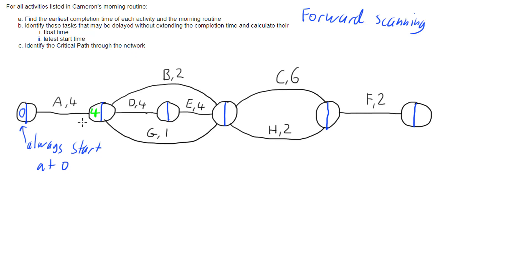Now we look through to the next node. This next node is operating off of D, which is working off of that four. Activity D can't start until this node has been reached, so it can't start until four minutes in. But it takes four minutes, so it will finish eight minutes in.